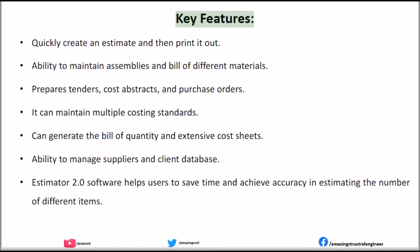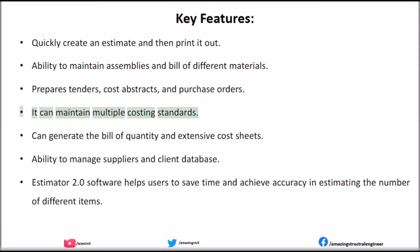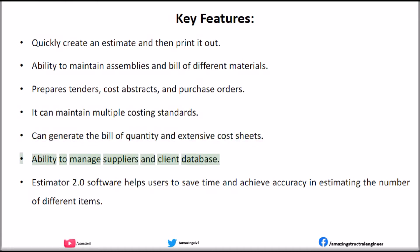Key Features of Estimator 2.0: Quickly create an estimate and then print it out. Ability to maintain assemblies and bill of different materials. Prepares tenders, cost abstracts, and purchase orders. Can maintain multiple costing standards. Can generate the bill of quantity and extensive cost sheets. Ability to manage suppliers and client database. Estimator 2.0 helps users to save time and achieve accuracy in estimating the number of different items.